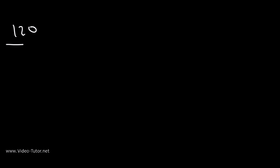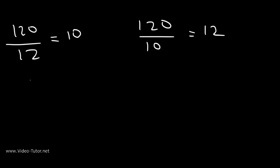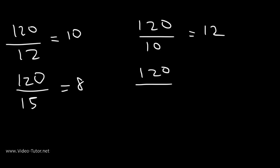To verify: 120 divided by 12 is 10, 120 divided by 10 is 12, 120 divided by 15 is 8, and 120 divided by 8 is 15. So 120 is a common multiple of 8, 10, 12, and 15. If you want to confirm it's the least common multiple, you can make lists — though that takes time. That's it for this video. Thank you for watching, and have a great day.